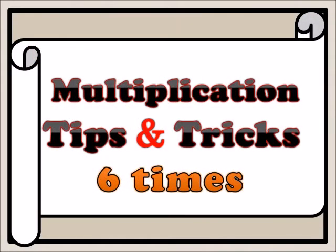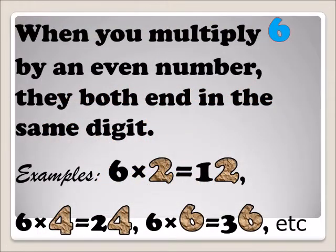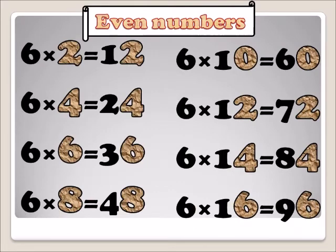Multiplication tips and tricks: when you multiply six by any even number, they both end in the same digit. Six times two — the last digit is two. Six times four — the last digit is four. Six times six — the last digit is six. Six times eight — the last digit is eight. Six times ten — the last digit is zero. Six times twelve — the last digit is two. Six times fourteen — the last digit is four. Six times sixteen — the last digit is six.